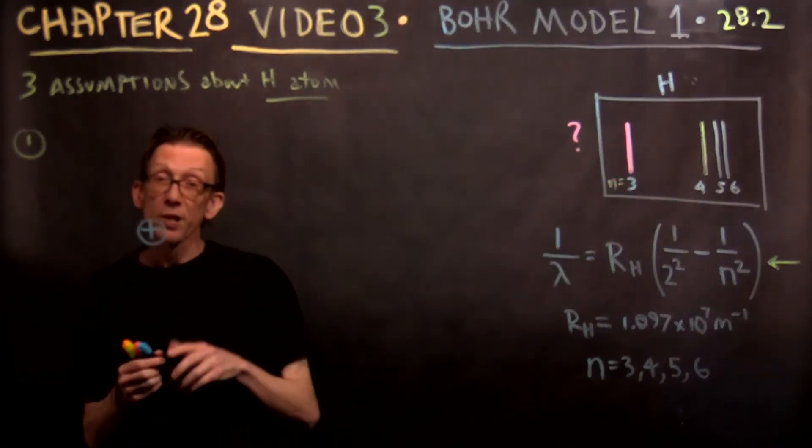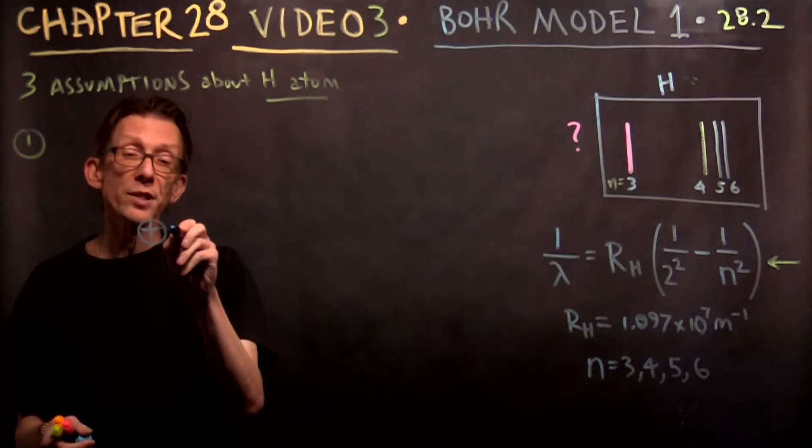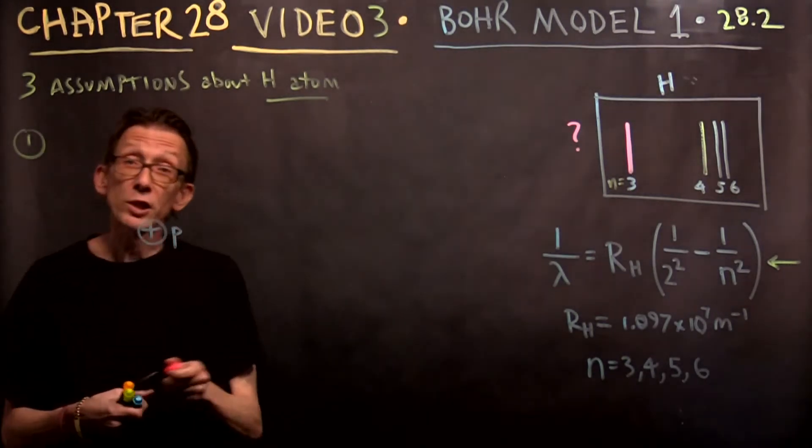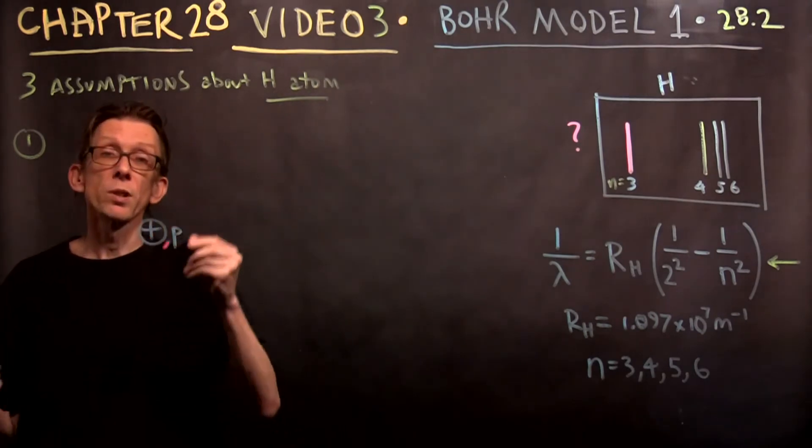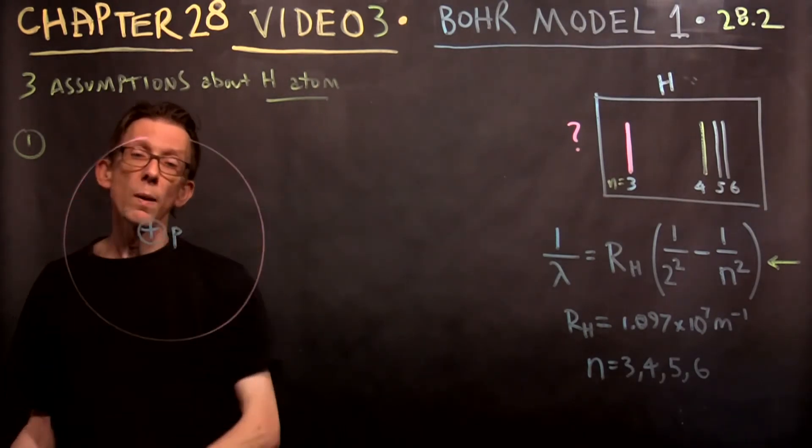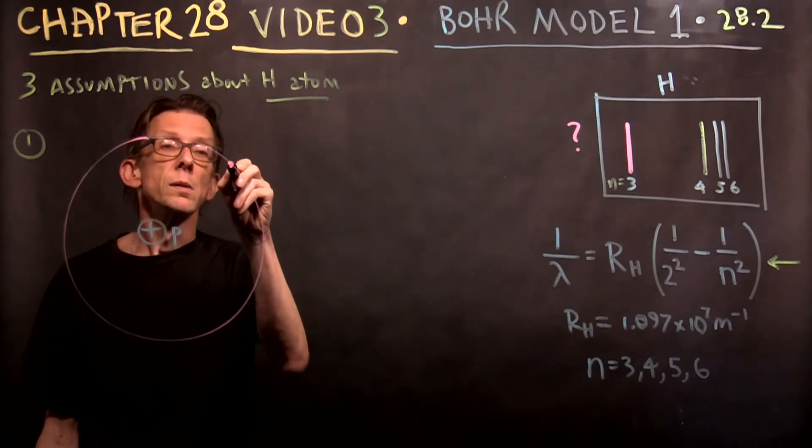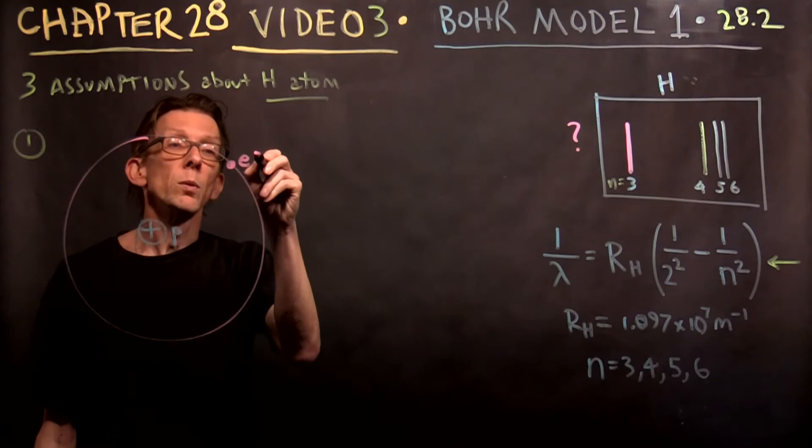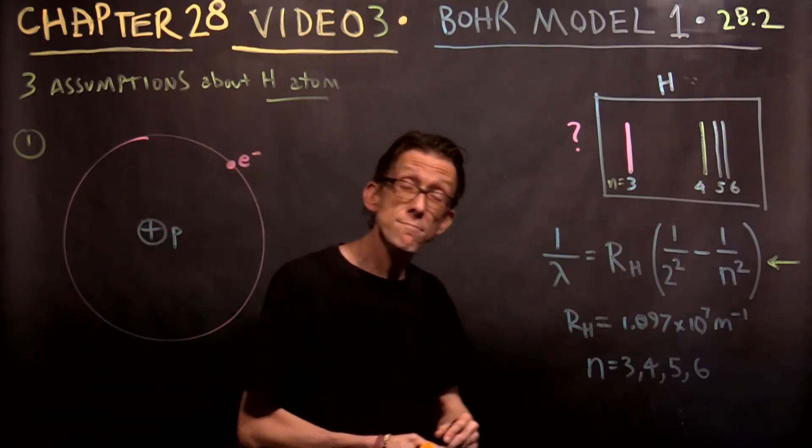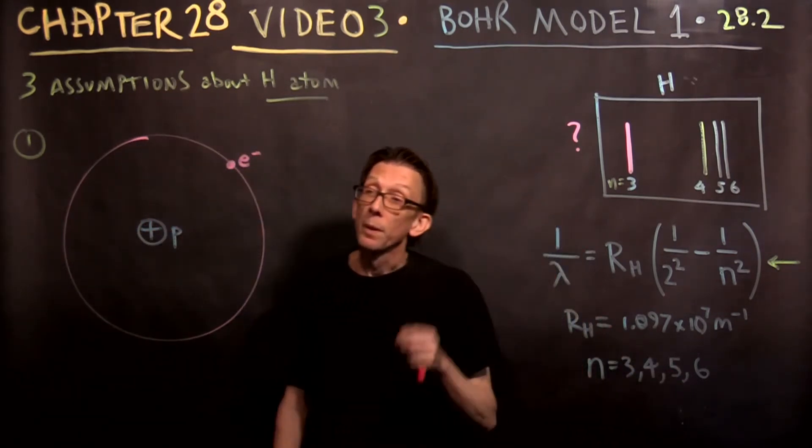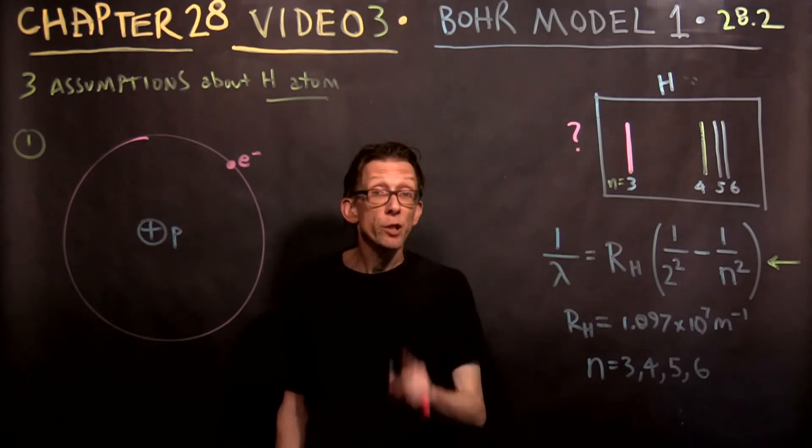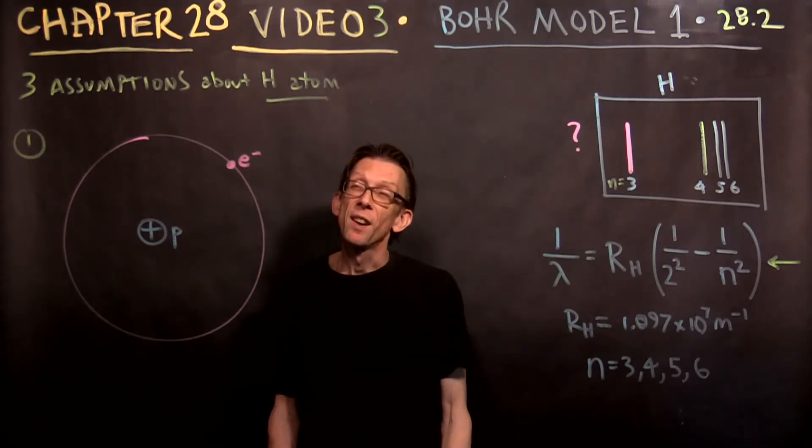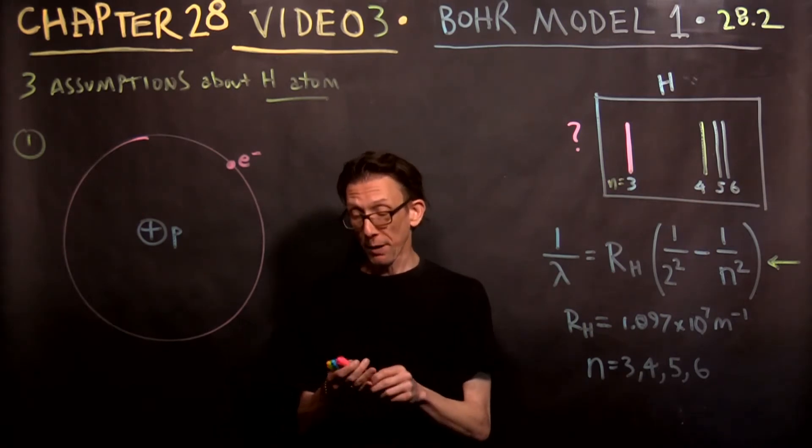So the first assumption was that there's a proton in the middle, a positive nucleus. And the electron, he assumed, goes in a circular orbit around it. Okay, which of course is not true. But it was fruitful in this case, as we'll see. So he figured there was a proton in the middle with an electron that goes around it.